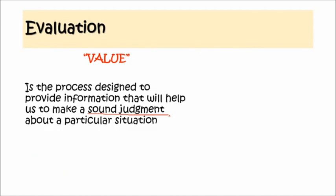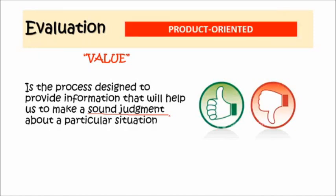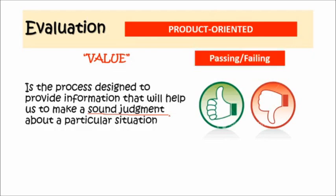In the evaluation part, this is the culminating aspect wherein we qualify what has been learned. We provide closure and judge the quality of instruction. Evaluation is product-oriented — it looks at the final product. In the evaluation aspect, this is where we pass or fail a particular student, where we reject or accept. In the evaluation part, this is talking about grading and promotion — whether to retain a student or to promote them to the next level.